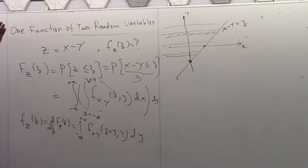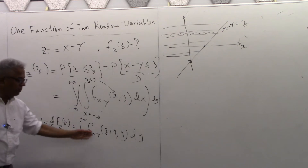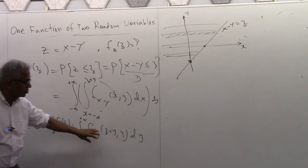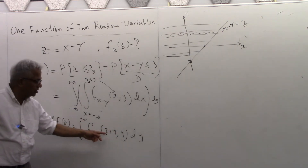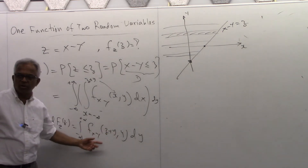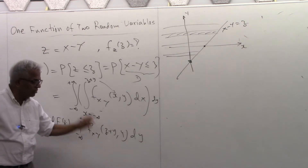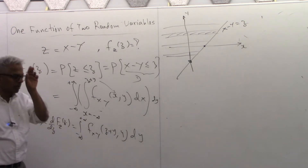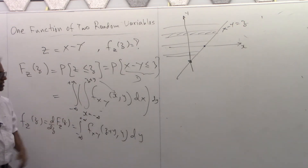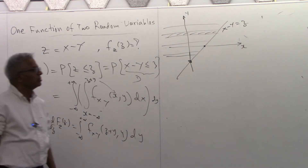You could have taken a vertical strip as well. If X and Y are independent, this becomes a product. And if you want, this is not really convolution, but it is related to a convolution of f_X evaluated at minus Z, etc.